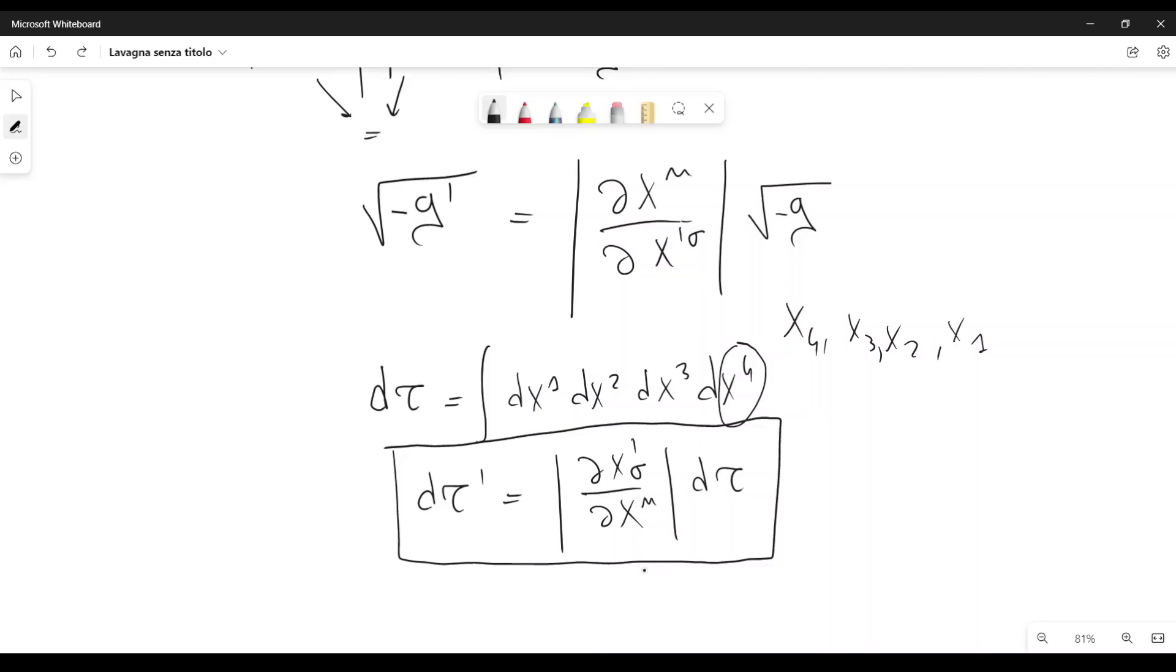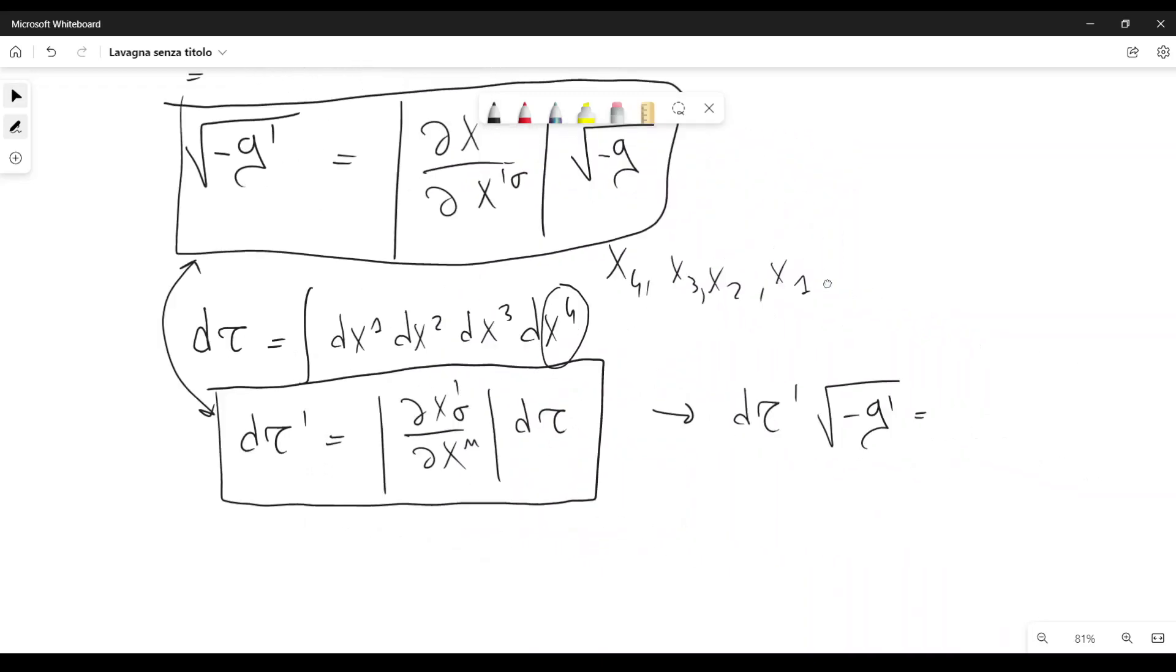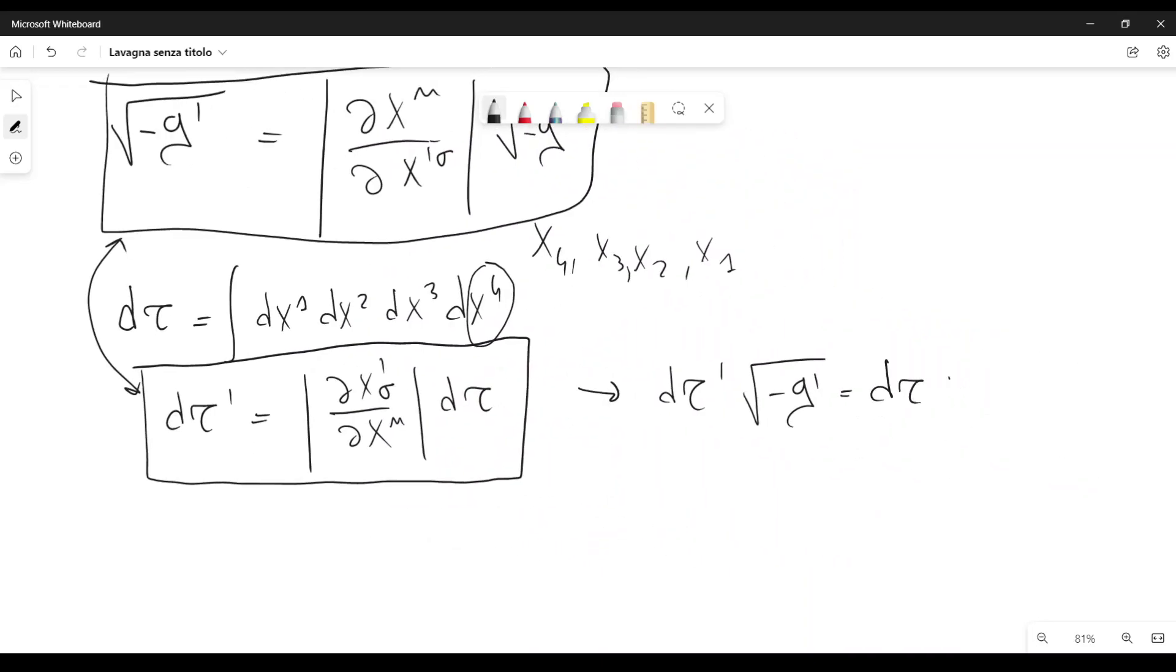But now you can infer from this equation here and this equation here that D tau prime multiplied by the square root of minus G prime equals D tau multiplied by the square root of minus G, because these determinants here and here would cancel each other. One is the inverse of the other. And therefore we get this result, which shows the invariance of this infinitesimal element.